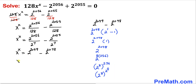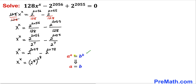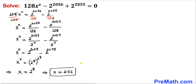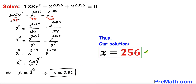So x power x turns out to be equal to (2 power 8) whole power (2 power 8). Recalling the basic rule that if a power a equals b power b then a equals b, our equation gives us x equals 2 power 8. Since 2 power 8 is 256, our solution is x equals 256.